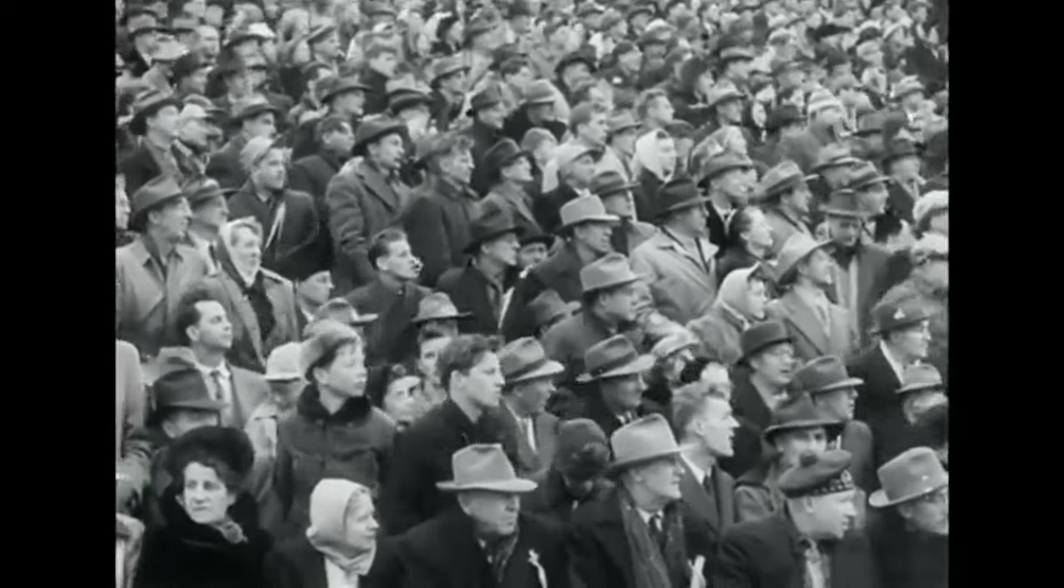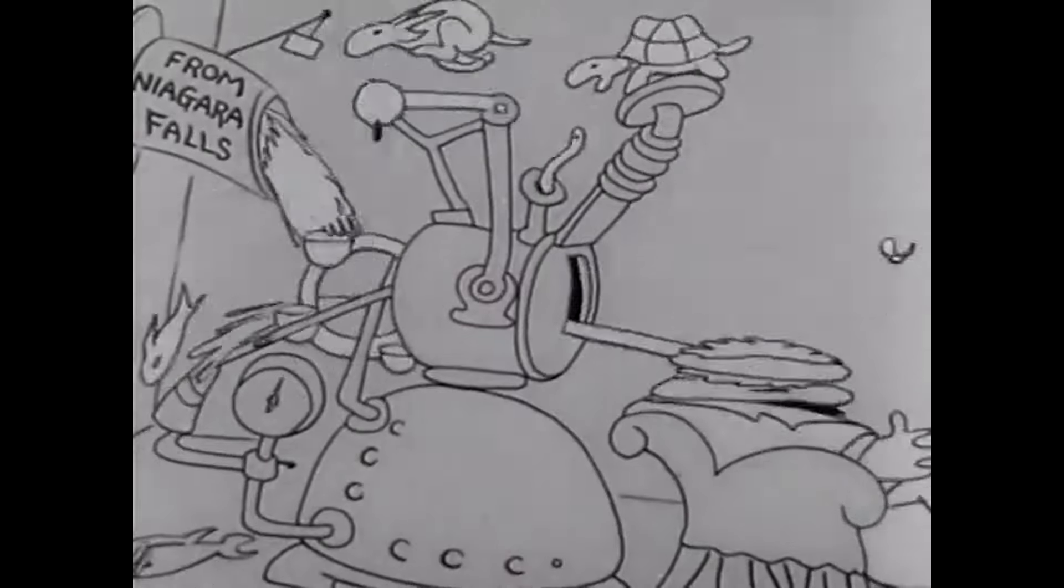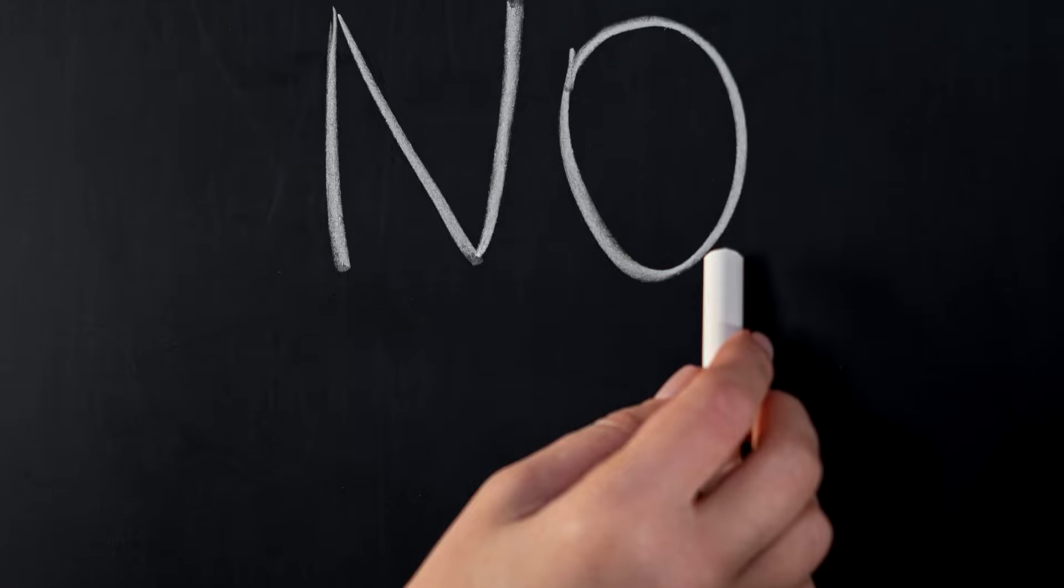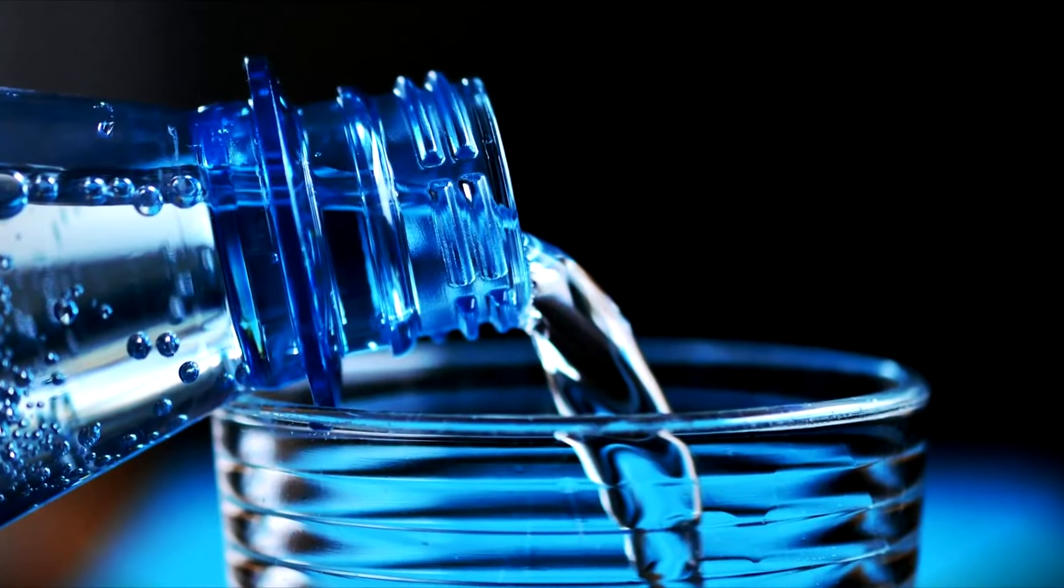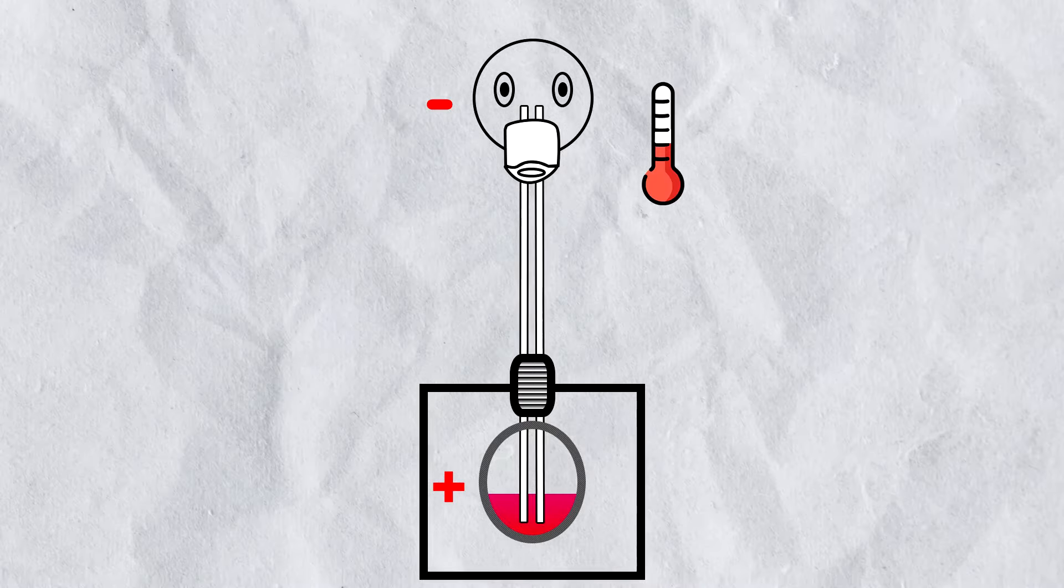Now, the part you were all been waiting for. Is a dippy bird a perpetual motion machine? The answer is, of course, no, because it relies on outside heat sources like air and water to create temperature difference between head and base.